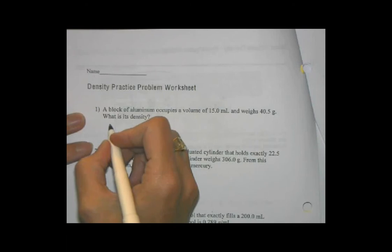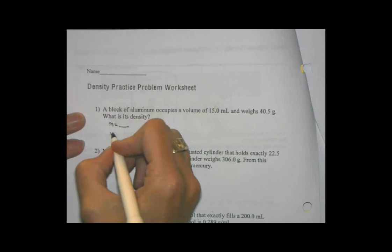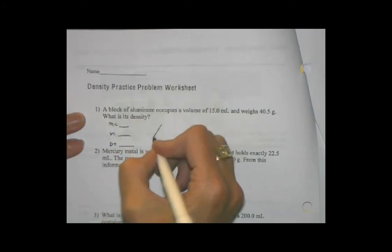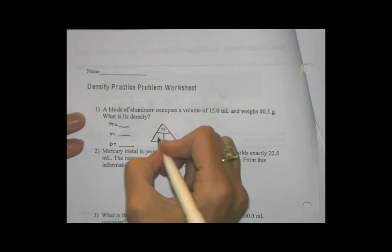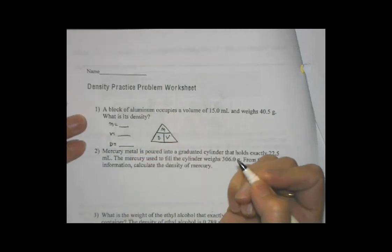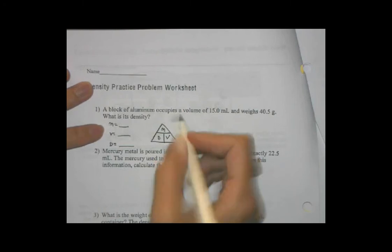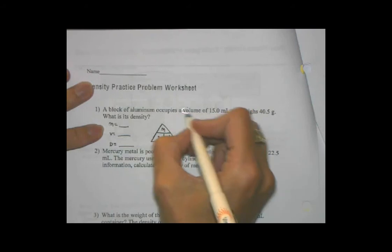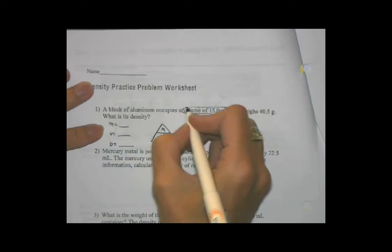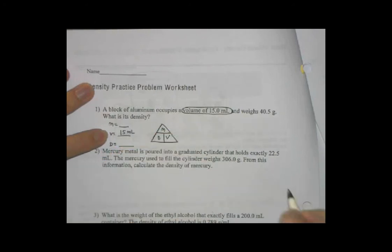Mass equals blank. Volume equals blank. Density equals blank. And I'm going to write my triangle over here. My Mrs. Deborah triangle. Now I'm ready to start reading through the problem and filling in these blanks. It says a block of aluminum occupies a volume of 15 milliliters. So right there, I have one bit of information I can fill in. Volume is 15 milliliters.